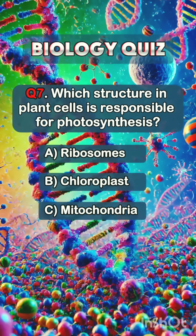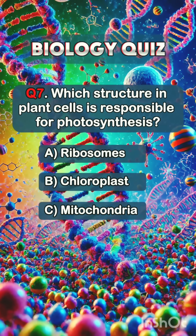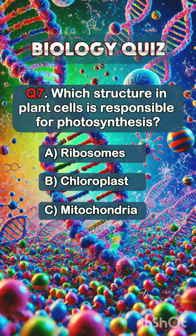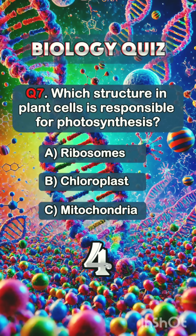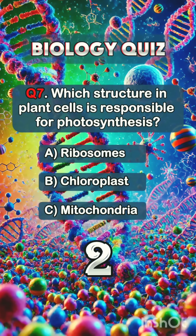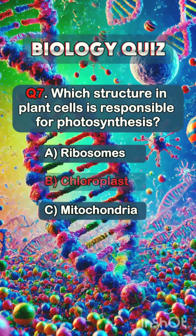Question 7. Which structure in plant cells is responsible for photosynthesis? Answer B: chloroplast.